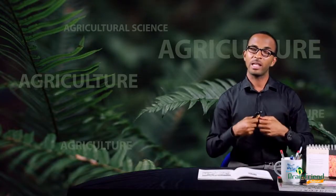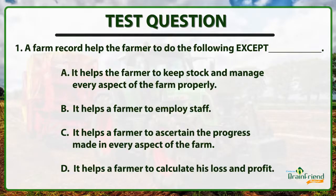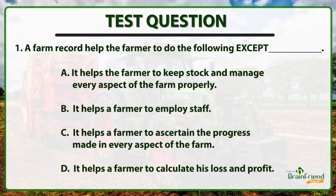Now let us test ourselves with some questions. Question number one: a farm record helps the farmer to do the following except — A. It helps the farmer to keep stock and manage every aspect of the farm properly. B. It helps a farmer to employ staff. C. It helps a farmer to ascertain the progress made in every aspect of the farm. D. It helps a farmer to calculate his losses and profits. The answer is B — it helps a farmer to employ staff.